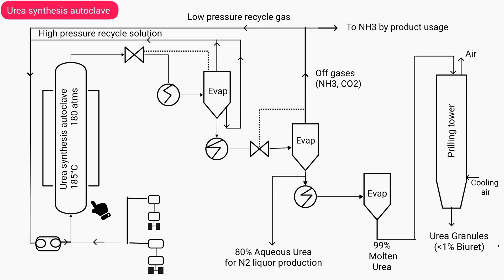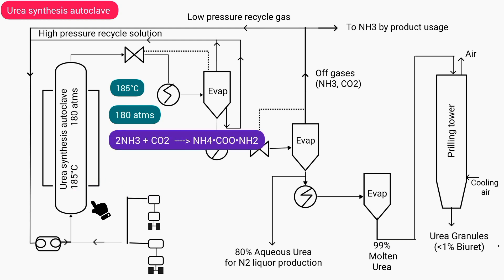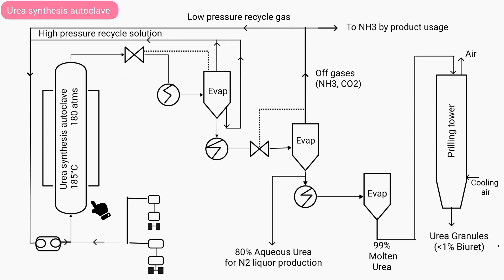This is called the urea synthesis autoclave. The temperature inside it is 185 degrees Celsius and the pressure is 180 atmospheres. Cooling water is supplied to maintain the temperature inside it. Inside it, ammonia gas and carbon dioxide gas react with each other, and there is also decomposition of ammonium carbonate, and then urea is formed.